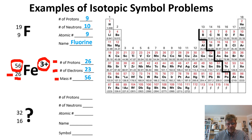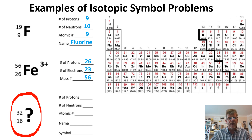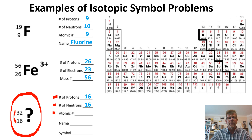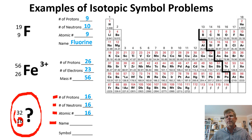The next example uses a question mark as the elemental symbol — that's what we need to find. The lower number is 16: that's the number of protons. Number of neutrons: 32 minus 16 equals 16. Atomic number: 16, same as the number of protons. For the name of the element, we go to the periodic table and look for atomic number 16 — that is sulfur, with symbol S.